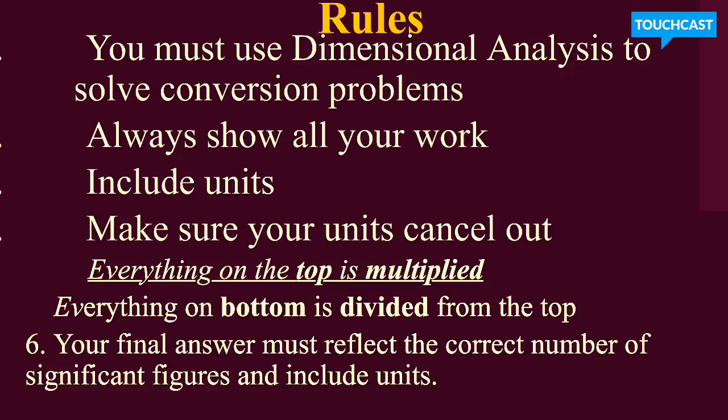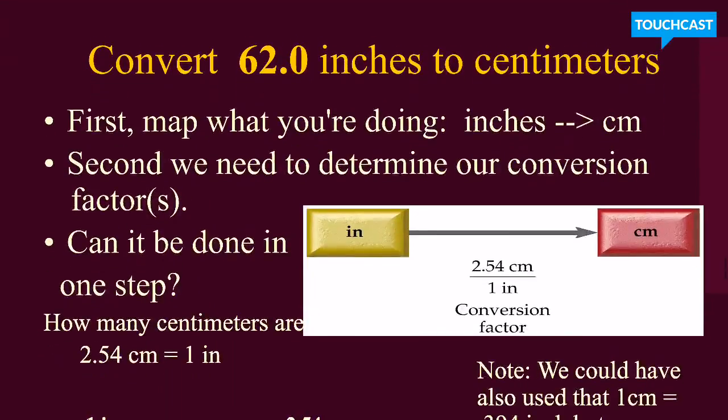Now, there are some rules that we need to obey when we are showing our work in my classroom. So you need to use dimensional analysis whenever we are trying to solve conversion problems. And when you do that, you need to make sure that you're showing all your work, that you are including your units, and make sure your units cancel out. And remember, everything on the top is multiplied and everything on the bottom is divided from the top. And please make sure that your final answer reflects the correct number of sig figs and includes units. Alright, so let's take a look at some real examples.